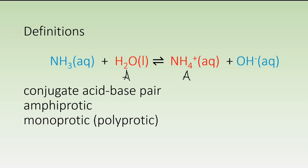We also need to label Bronsted-Lowry bases. We'll identify those substances in blue. Every Bronsted-Lowry reaction is going to have two acids and two bases, which makes it a little bit hard to distinguish the reactants from the products. By definition, the reactant acid and base will be the native acid and base, and the substances produced that go through the reverse reaction are referred to as conjugate acid and conjugate base.